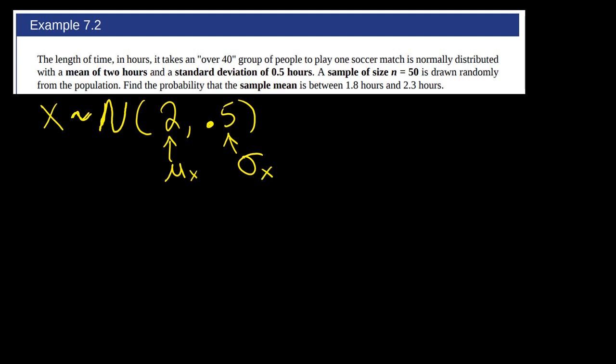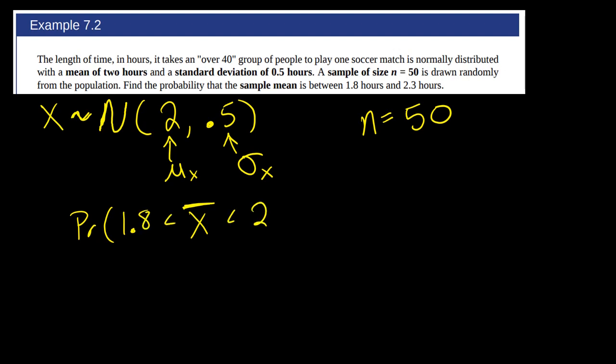They have taken a sample of size 50 — so n equals 50, meaning they looked at 50 soccer matches — and they want to know the probability that the sample mean x̄ is between 1.8 hours and 2.3 hours.